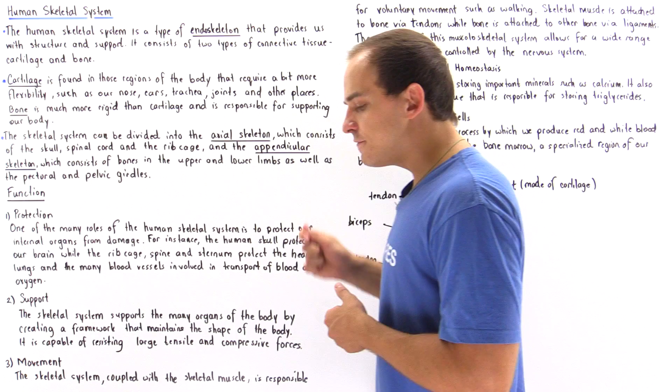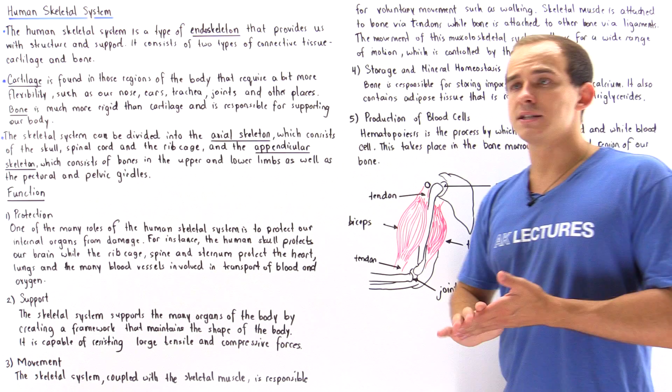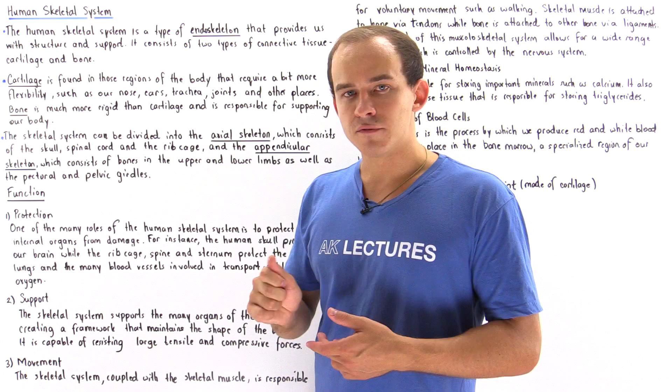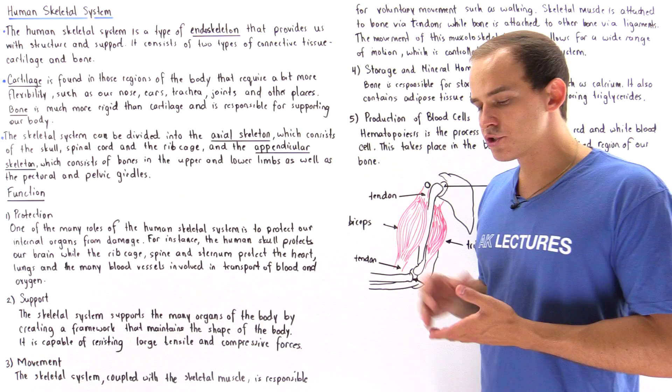Now let's discuss the different types of functions of the human skeletal system. So what roles does the skeletal system actually play? We have five important functions that we have to be aware of: protection, support, movement, storage and mineral homeostasis, as well as the production of blood cells known as hematopoiesis. Let's begin by briefly discussing the concept of protection.